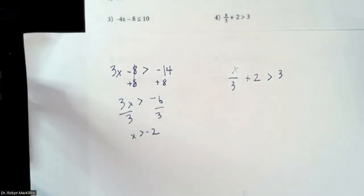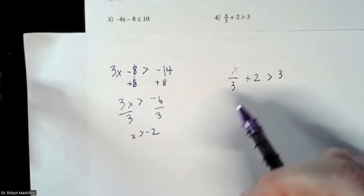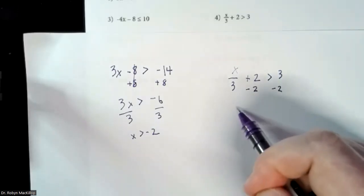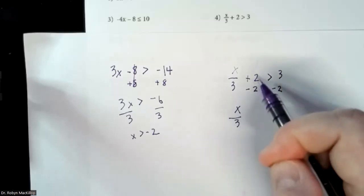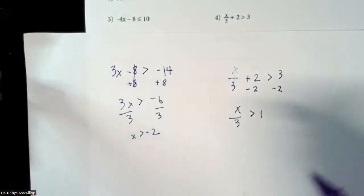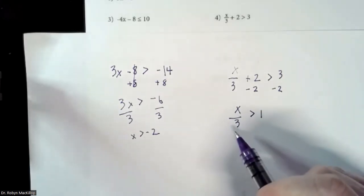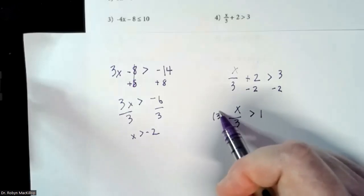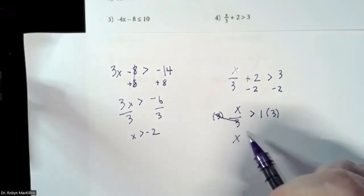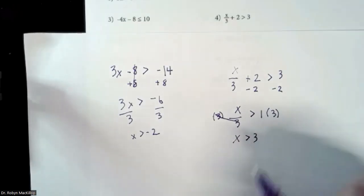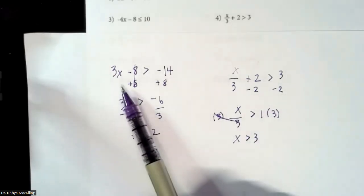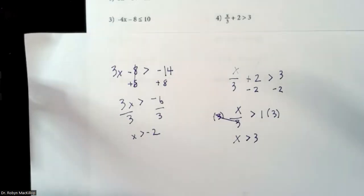Let's do a division problem: x over 3 plus 2 is greater than 3. We need to get rid of the extra first — don't even worry about the fraction until you get rid of this 2. Take away 2 from both sides. That leaves us with x over 3 greater than 3 minus 2, which is 1. Now we've got to get rid of that 3. Because it's already a division problem, we're going to use multiplication. Multiply both sides by 3 — these cancel. That leaves us x greater than 1 times 3, which is 3.